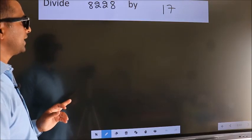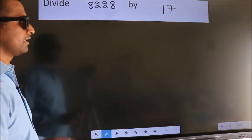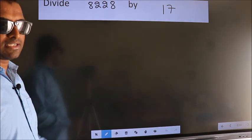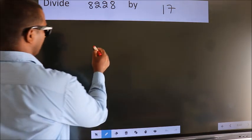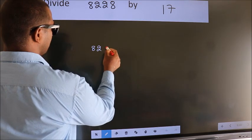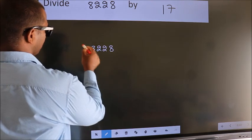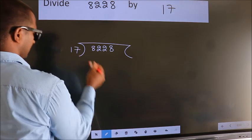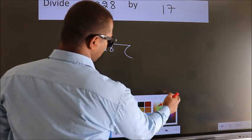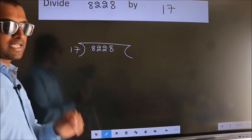Divide 8228 by 17. To do this division, we should frame it in this way: 8228 here, 17 here. This is your step 1.